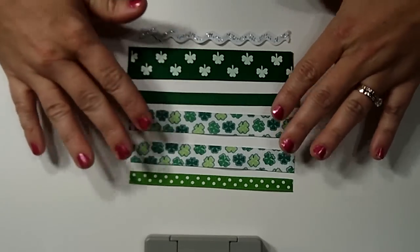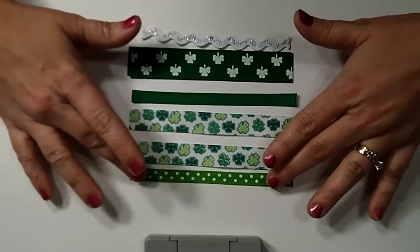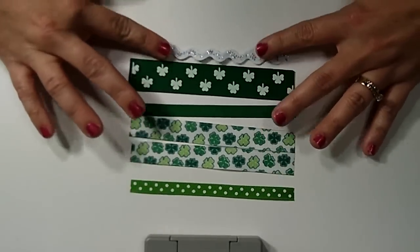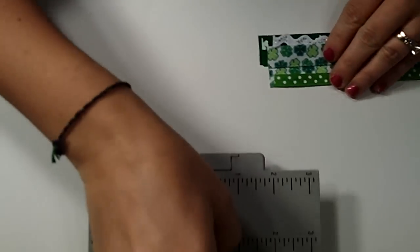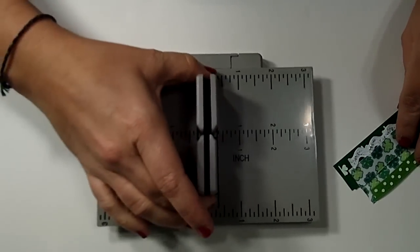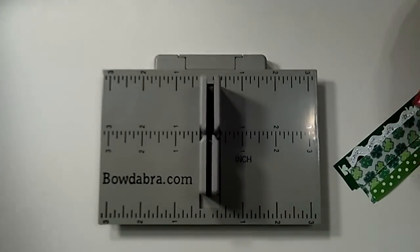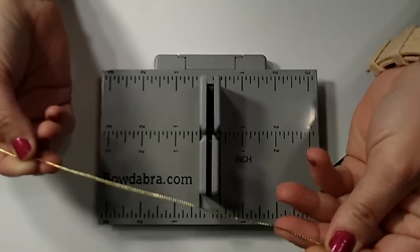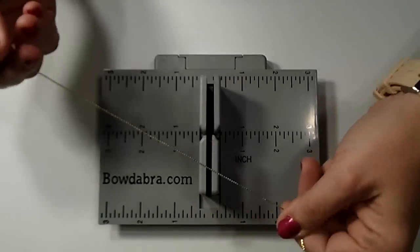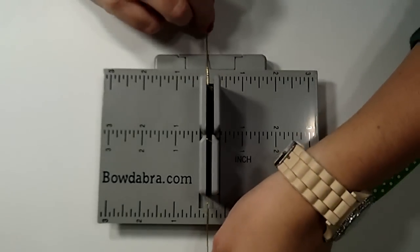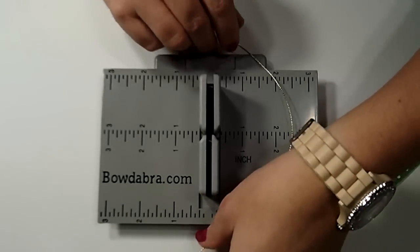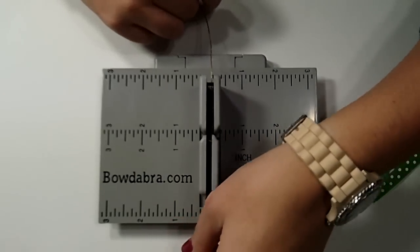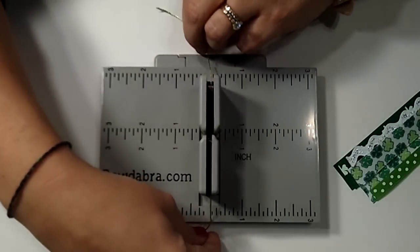So we're going to use our St. Patrick's Day ribbon today. I have one, two, three, four, five, six pieces of ribbon and they're all cut to five inches long. We're going to start by putting the Bowdabra, which comes with this piece of what they call Bowdabra wire. You could use anything, but I'm going to use this because it came with it. You just lay it in there, lay it down, and then you're going to put your ribbon on top of that.